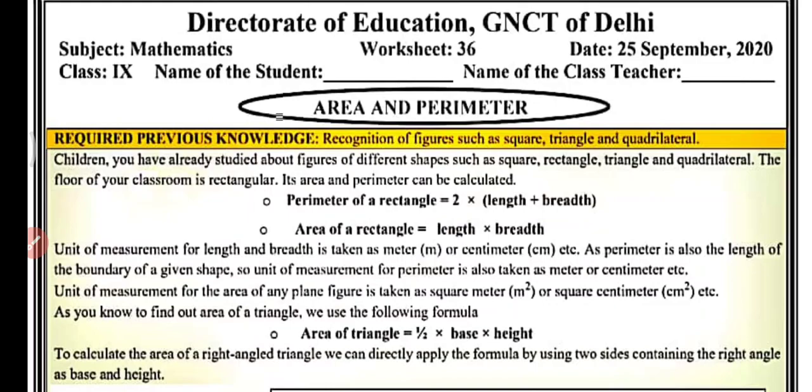And quadrilateral — quadrilateral has many types, like square, rectangle, parallelogram, rhombus, trapezium. You should know about all of these. So children, you have already studied about figures of different shapes such as square, rectangle, triangle, and quadrilateral.